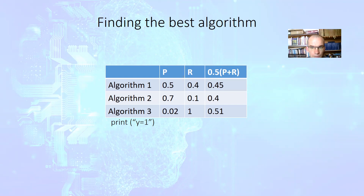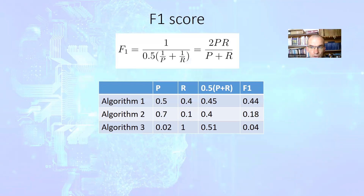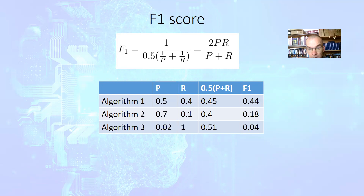What other criterion should be used for evaluation? This is the harmonic mean of precision and recall, called the F1 score. It is calculated using the formula shown, and we can see that algorithm 1 is the best among these three. Although it does not have the highest precision or recall individually, its F1 score — its harmonic mean — is the highest of the three algorithms.